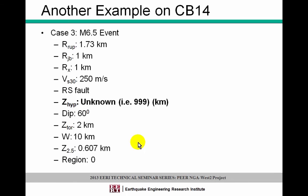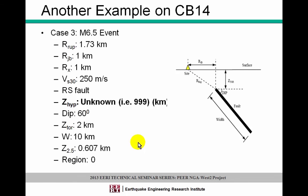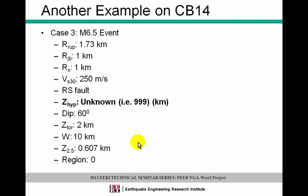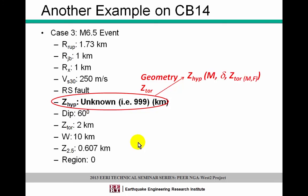Another important case: if you don't know your hypocentral depth, you have two options. First, if you know some information about the geometry of the fault or the Ztor, then the default hypocentral depth can be calculated and that will be defined in the code. Or if you don't know anything about it, then the default should be 9 kilometers. These defaults are assigned by the Earthquake Spectra papers by the GMPE developers.